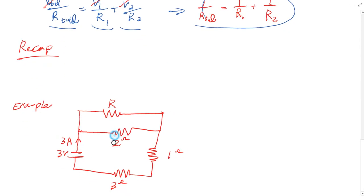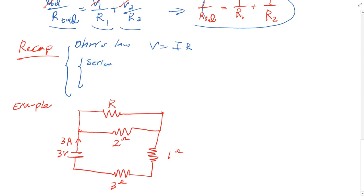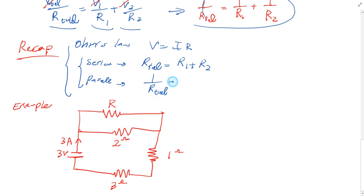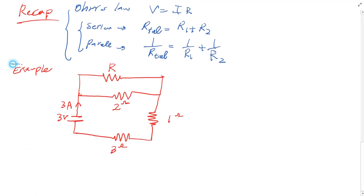Let's do a recap. First, we have Ohm's Law: V equals IR. Second, if resistors are in series, R total equals R1 plus R2. If resistors are in parallel, 1 over R total equals 1 over R1 plus 1 over R2.